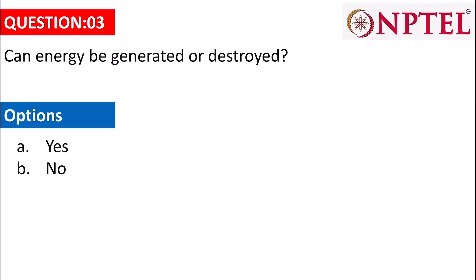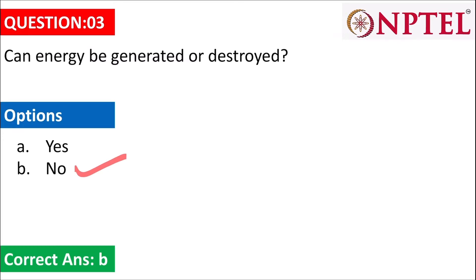The next question asks: can energy be generated or destroyed? No. According to the conservation of energy principle, energy can neither be created nor destroyed, but can be converted from one form to another. In any example you observe, some kind of energy is converting into a different kind, but it is neither destroyed nor created. So the answer is no.